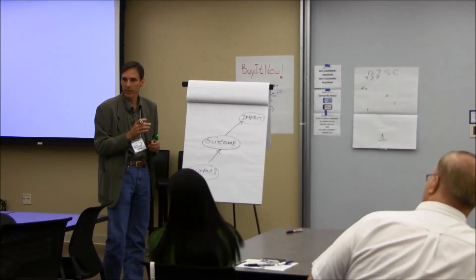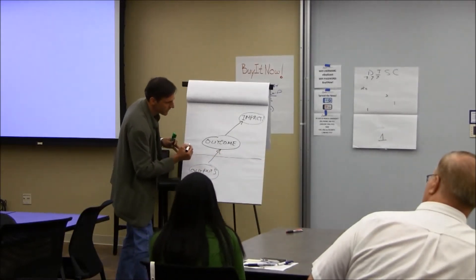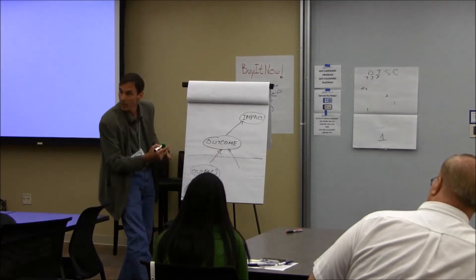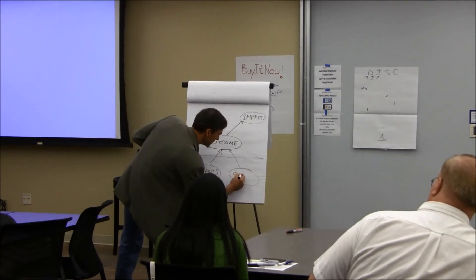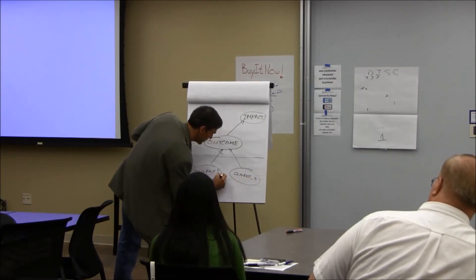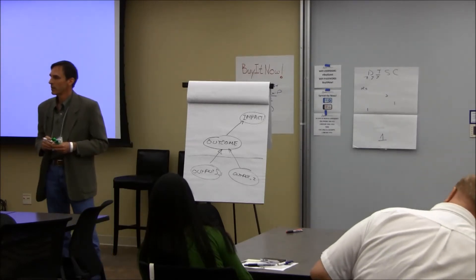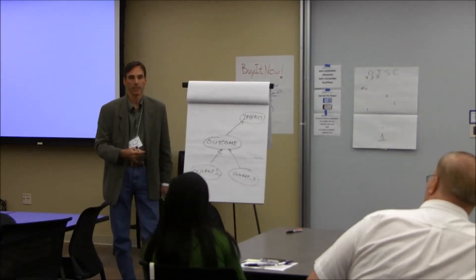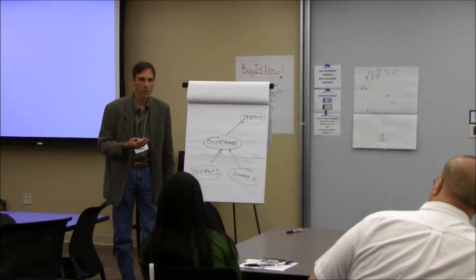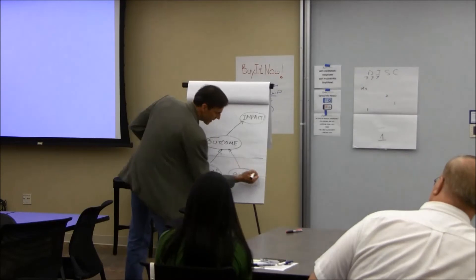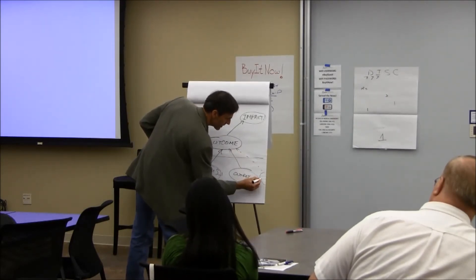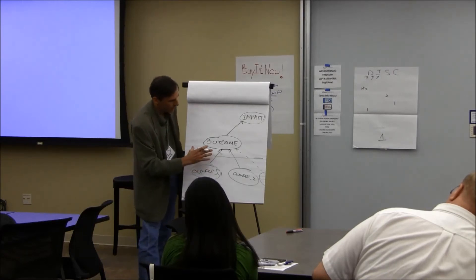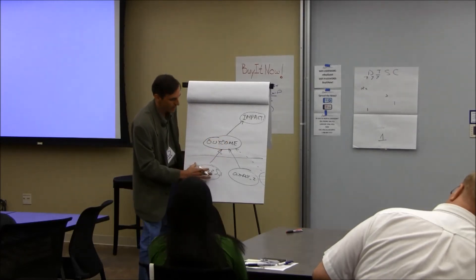Another thing I want to show here is that this is very useful, because if we draw some lines, we may have different outputs to get the same outcome. I'll call this output two and output one. You should recognize this as the difference between a build and a buy to achieve the same outcome. We want to be able to think this way — we want to be able to add other types of outputs that can achieve the same outcome. This is how we leverage our decision-making capability. If we're able to think this way, then we can achieve the same outcome but evaluate the cost.